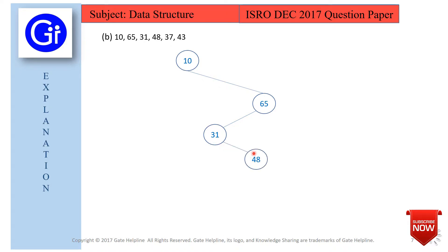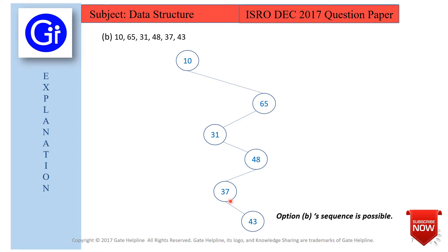After that we have 37. Since 37 is greater than 10 but less than 65, it goes on the left side. Since 37 is greater than 31 but less than 48, it will come on the left of 48. Then 43 is less than 65, so it comes on the left. 43 is greater than 31, so it comes on the right. 43 is less than 48, so it comes on the left. But 43 is greater than 37, so it comes on the right of 37. Option B sequence is also possible.